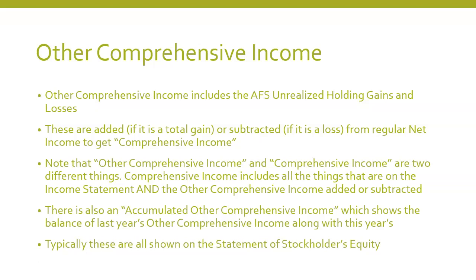Be very careful between whether it says 'other' in front of it or not. Other comprehensive income and comprehensive income are two different things. Comprehensive income includes all the things on the income statement plus other comprehensive income added or subtracted. There is also accumulated other comprehensive income, which shows the balance of last year's other comprehensive income along with this year's. These are all shown on the statement of stockholders' equity for a corporation.